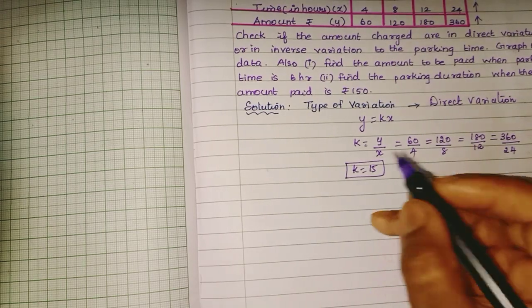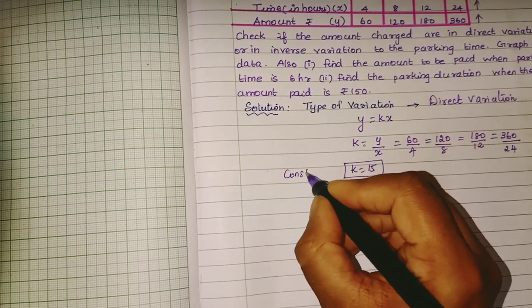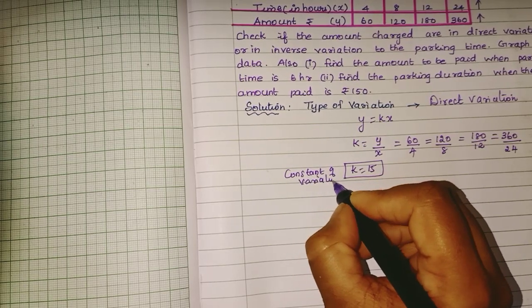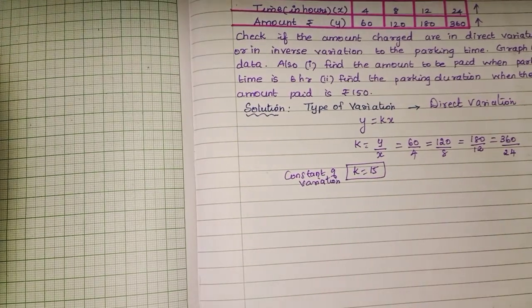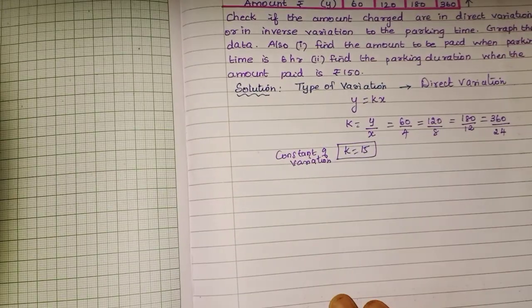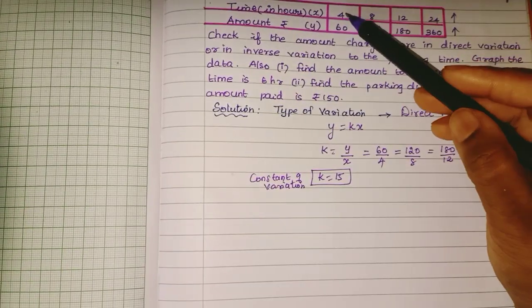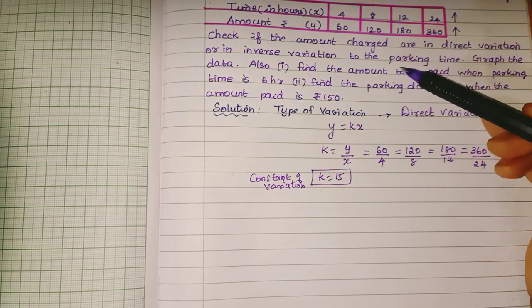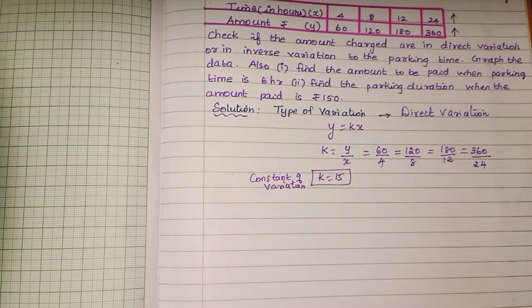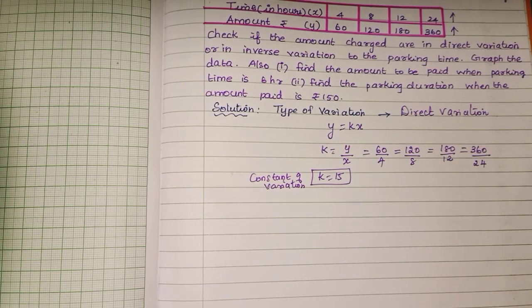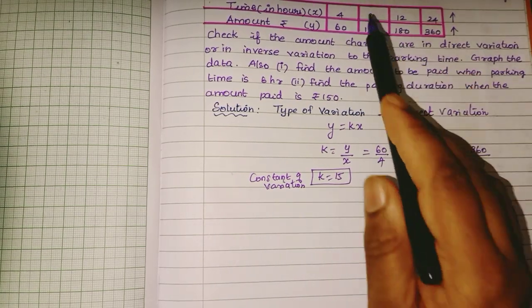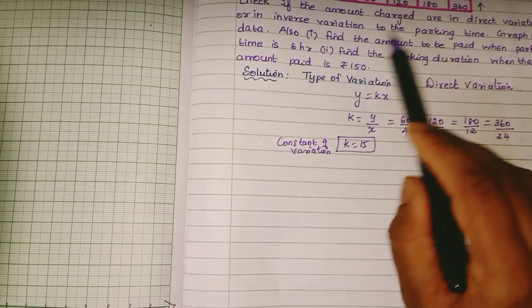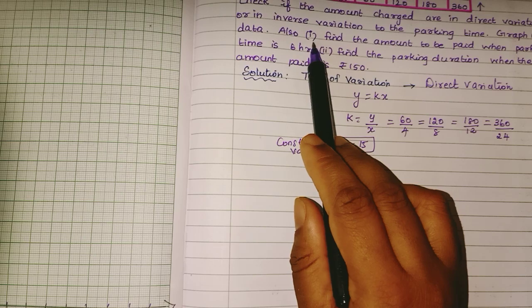This is the constant of variation, K is equal to 15. So 4 into 15 is 60, 8 into 15 is 120, 12 into 15 is 180, 24 into 15 is 360. So Y is equal to KX. Direct variation is Y is equal to KX.